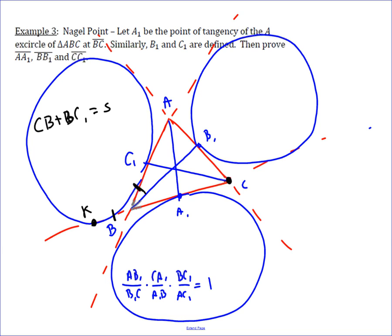It's also true in the opposite direction, where this point is L, that BL equals the semiperimeter. Using the same logic, CB plus CB1 also equals the semiperimeter. Since we're adding something to the same segment CB to reach the same semiperimeter in both cases, whatever we add must be equal. So from this we get BC1 equals CB1, and therefore the ratio BC1 over CB1 equals 1.